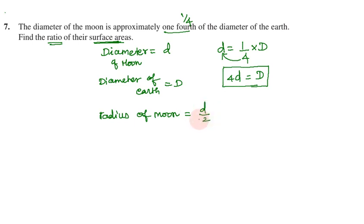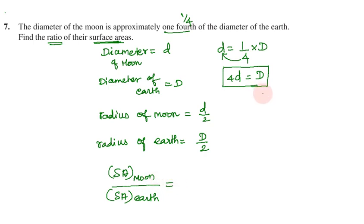Radius of earth, which is equal to surface area. So moon and earth are spherical in shape, so surface area of moon is four pi radius of moon squared divided by four pi radius of earth squared. Four pi r squared, that's the surface area formula for a sphere.